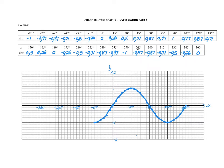You were asked to use any pattern you could notice to complete the graph back to negative 360 degrees. We noticed it starts on the x-axis, goes down to negative 1, back onto the x-axis, up to positive 1, and down to 0 again. Something significant happens every 90 degrees. Placing those dots in — down to 0, up to 0, up to 1, and down to 0 — I can now draw the remainder of the graph.